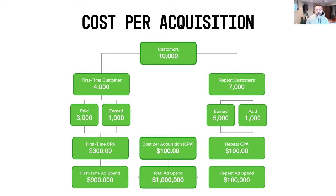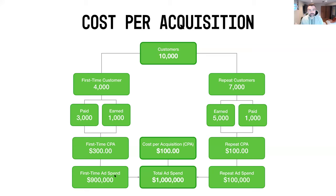This is a simpler way to describe cost per acquisition in a nutshell. We've got first-time customers and repeat customers on each side of the equation, with paid versus earned under both. Then we've got your first-time CPA and your repeat CPA, and finally the ad spend. The math works simply: 10,000 customers split between first-time and repeat, those customers break down further between earned and paid, and the paid customers multiplied by your CPA nets out to how much you're spending to acquire those customers. This gives us an overall picture of what cost per acquisition looks like for your e-commerce business.